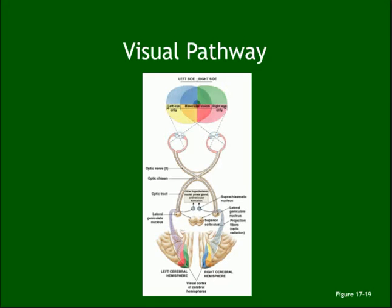The complete visual pathway: photoreceptors (rods and cones) → bipolar cells → ganglion cells → optic nerve → the fibers cross at the optic chiasm (chiasm means crossing) → optic tract → lateral geniculate body → optic radiation → occipital visual cortex. That is the end destination.